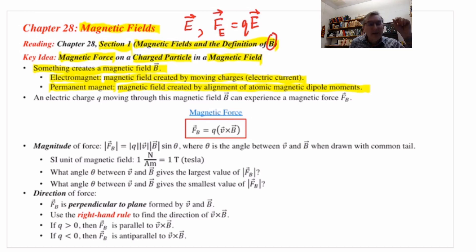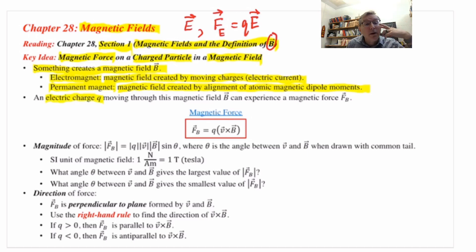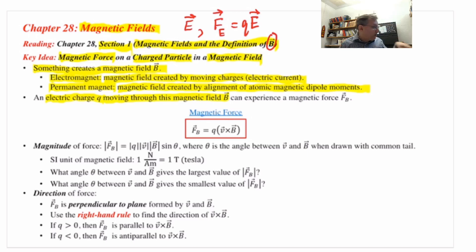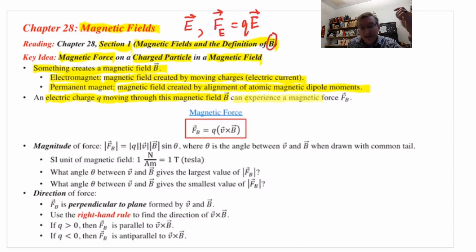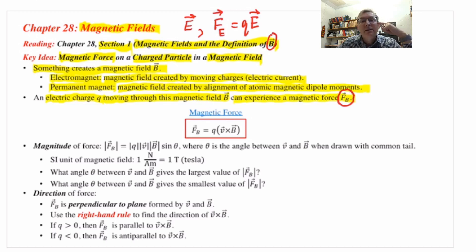Here comes an empirical fact from experiment. You have some amount of electric charge Q on a particle, and that particle is moving through a region of space where there's a magnetic field B arrow — perhaps because you're near a permanent magnet. Then you can find that the particle experiences a magnetic force, which we'll denote F sub B.